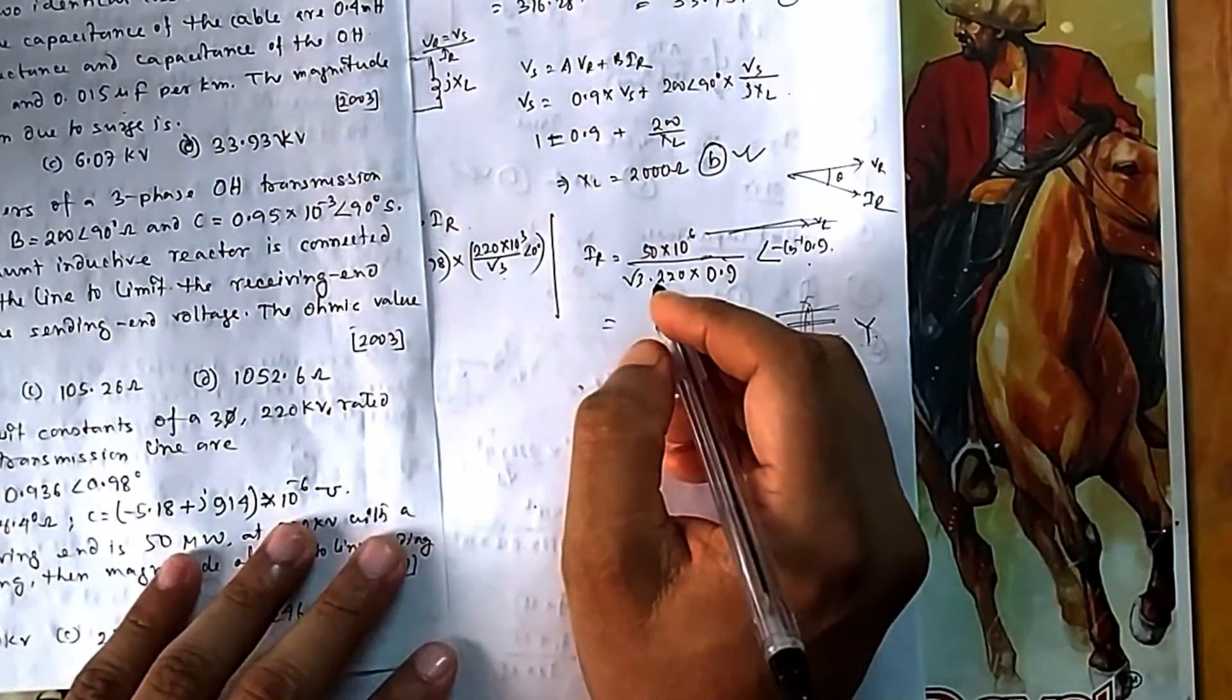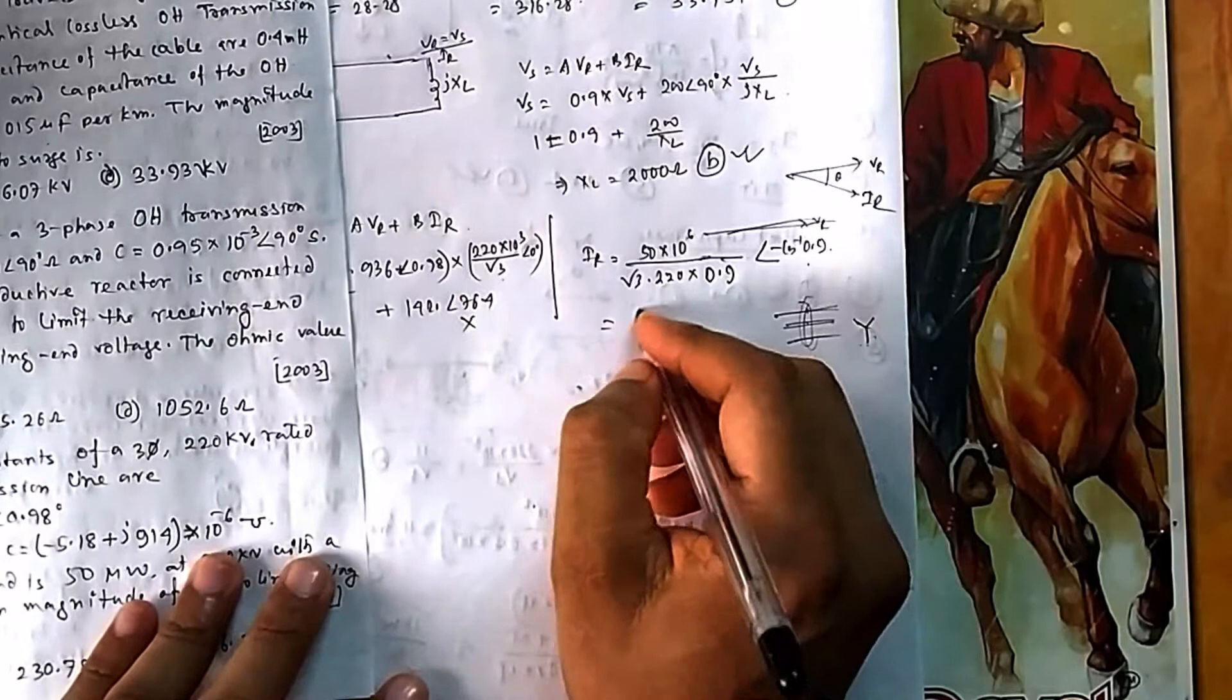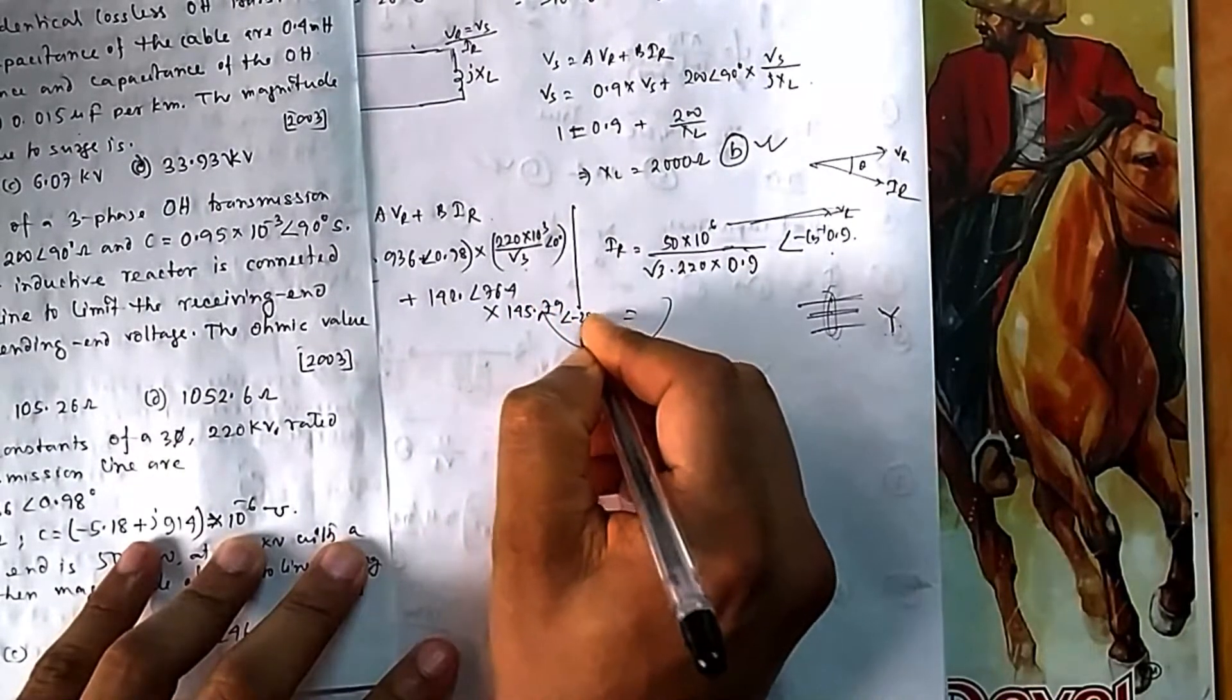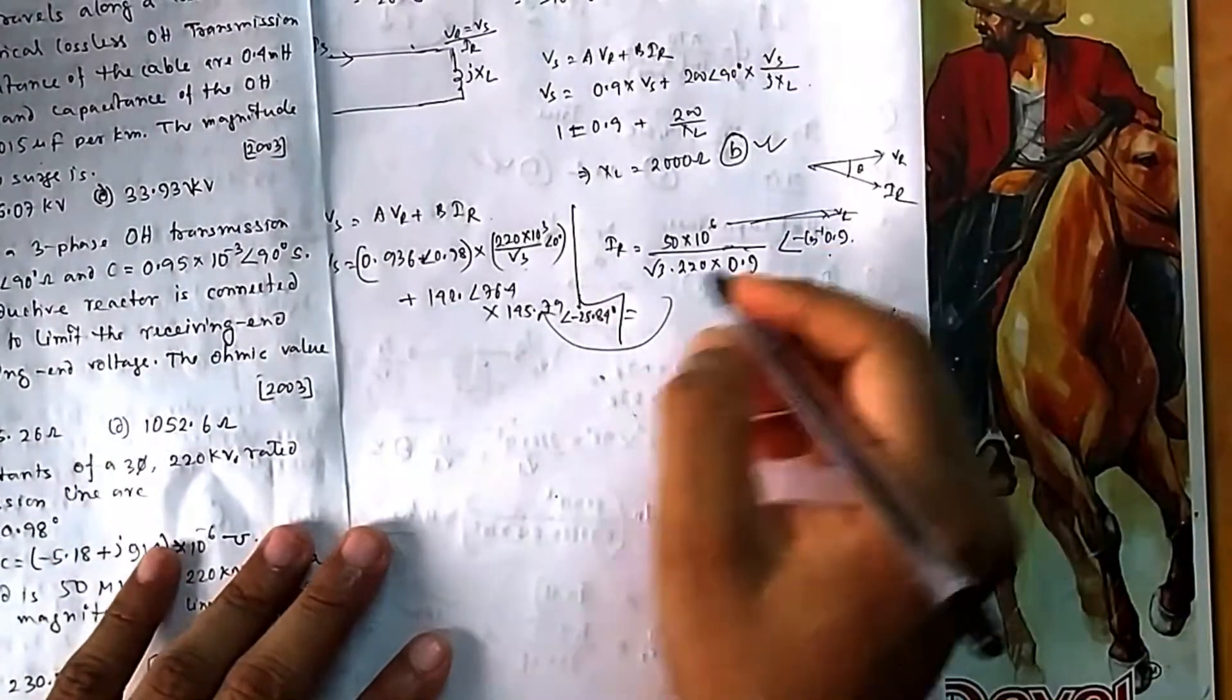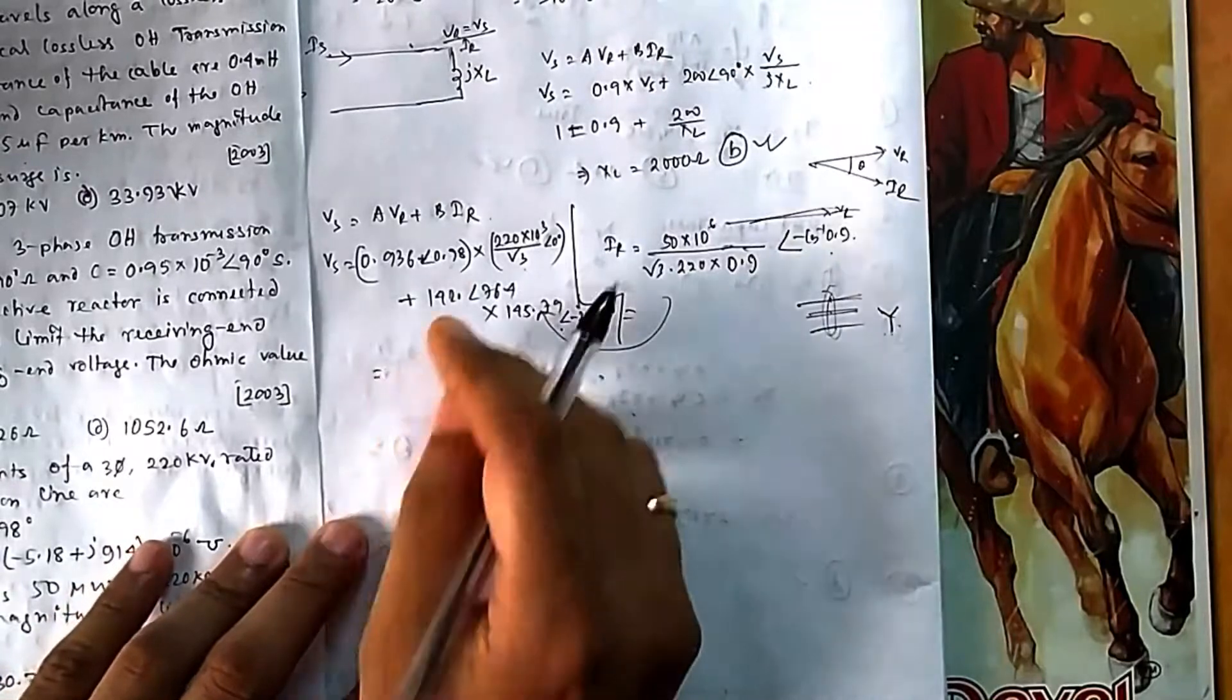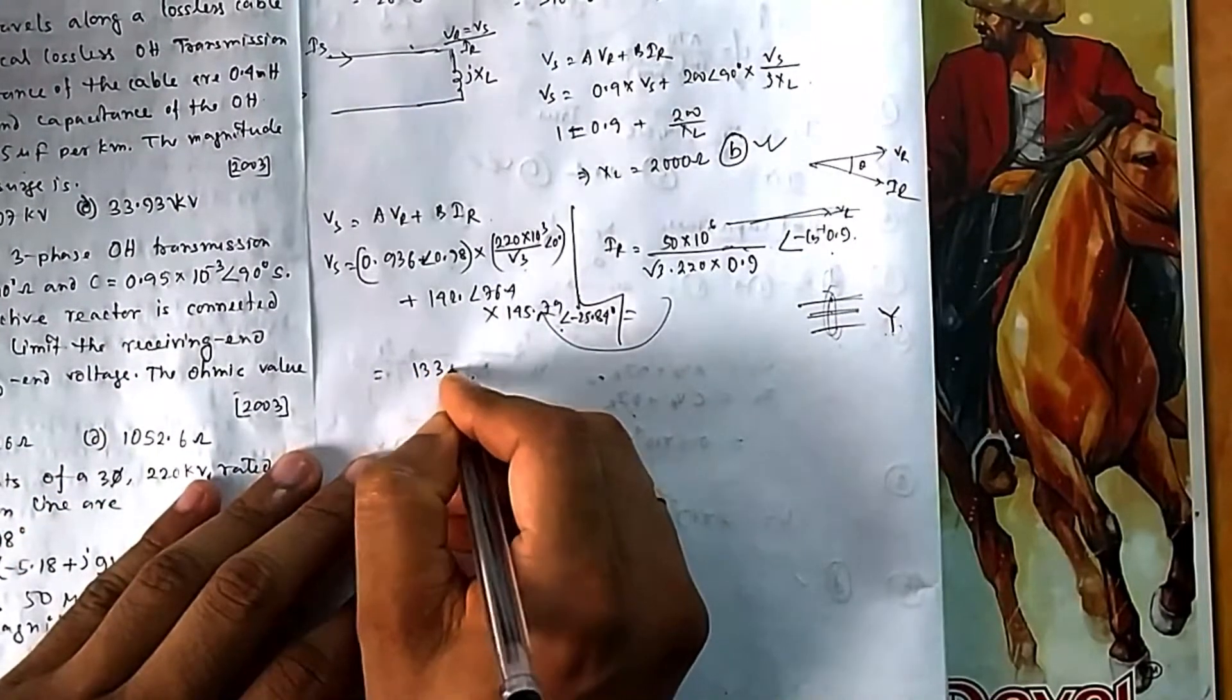For B, if I put this value, B = 142 at angle 76.4° multiplied by the Ir value you calculated. This gives 145.79 at angle -25.84°. These calculations you have to be very careful with, especially in exams. If you multiply in polar form, angles are added, but finally when you open it and need to add different angle components, problems arise.